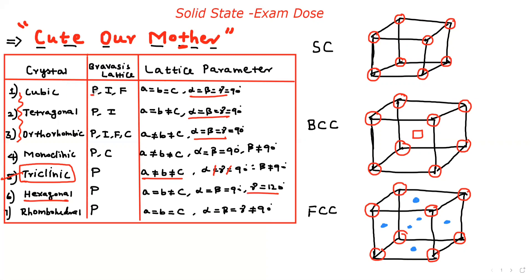Now, what is P? P stands for primitive. I stands for inner body-centered. F stands for face-centered. C stands for end-centered. So in a primitive, inner, and face-centered arrangement, primitive means simple cubic.